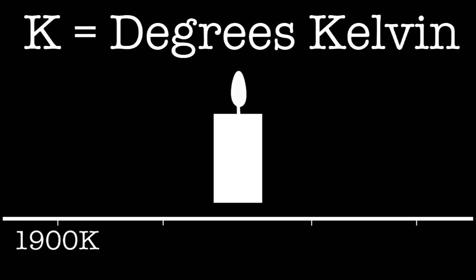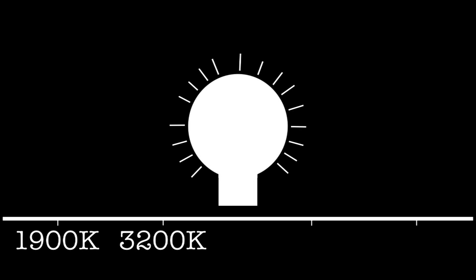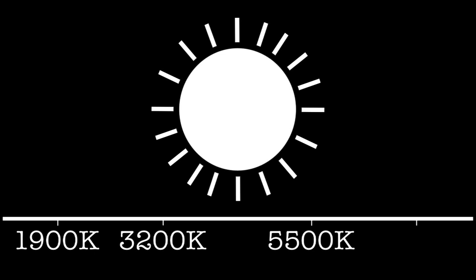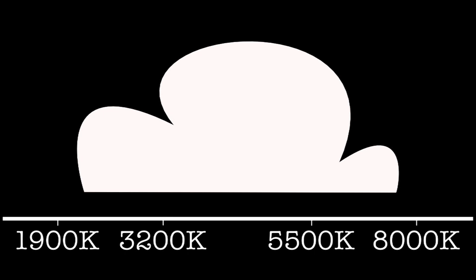A candle burns at about 1,900 degrees Kelvin — the K stands for degrees Kelvin, not thousand. A tungsten lamp is about 3,200 degrees Kelvin. Midday sun is about 5,500 degrees Kelvin, and a partly cloudy sky during the day is about 8,000 degrees Kelvin. As light sources become warmer, they have more and more blue, and as sources become cooler, they have more and more amber.